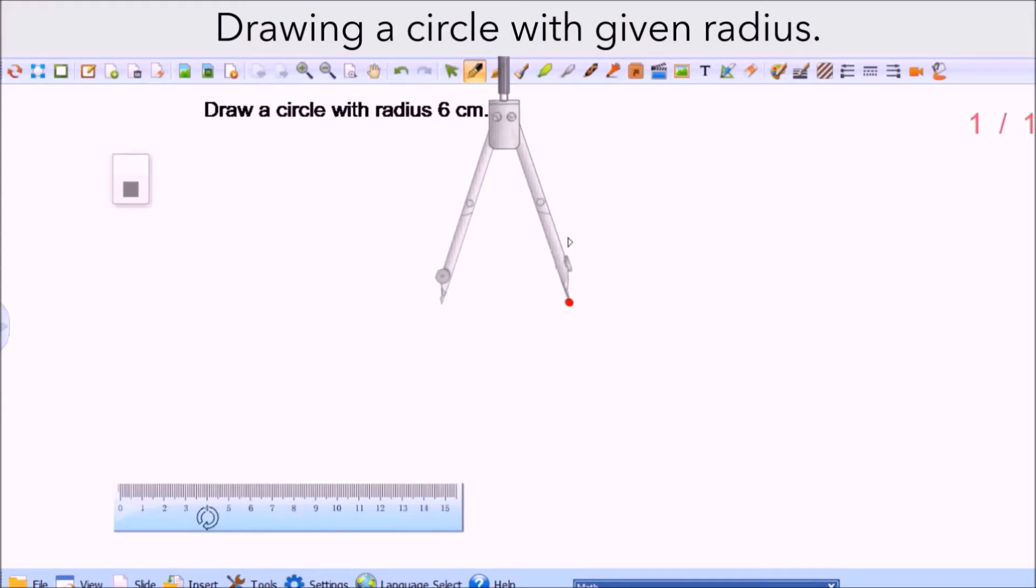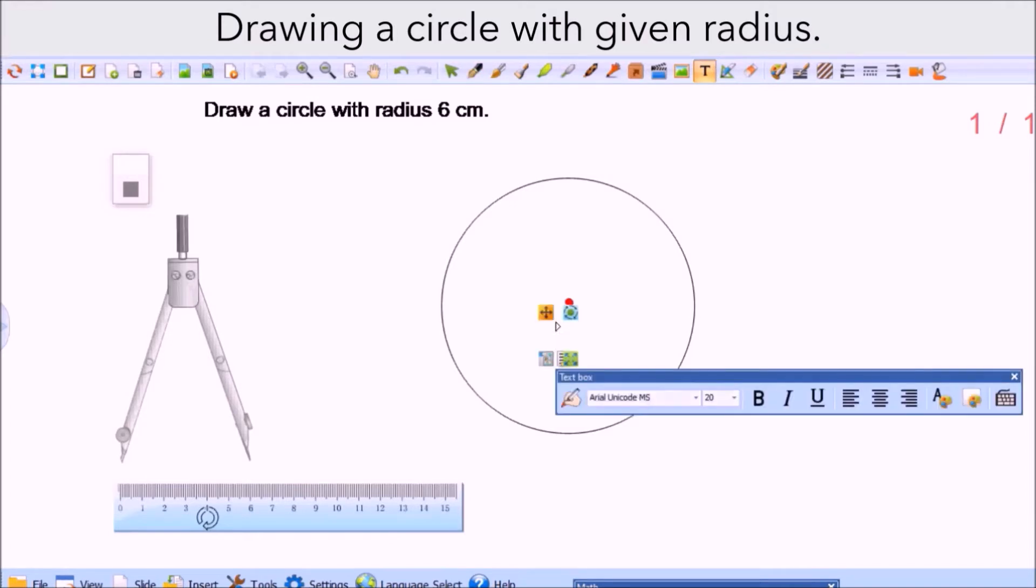Place the needle on the dot. Make sure that your compass point stays on this dot as you carefully draw the circle. Make sure that the opening doesn't change, that is very important. And then you have it, this is a circle of radius six centimeters. You can label the center as C or any letter that you would be needing.